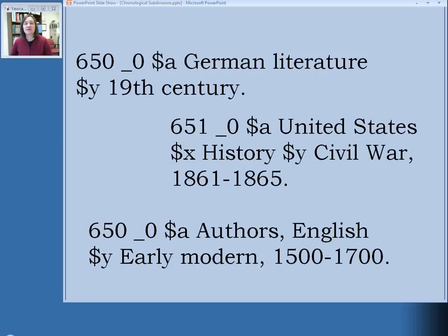In MARC formatting, chronological subdivisions are designated by subfield Y. The first example is a topical subject heading, so it uses the 650 tag. The main heading goes in subfield A — 'German literature' — and then the chronological subdivision '19th century' goes in subfield Y.